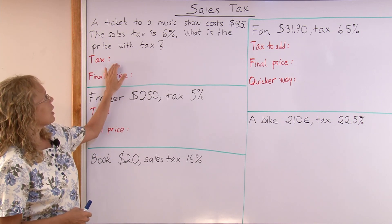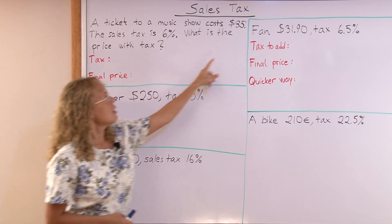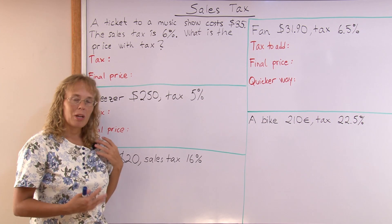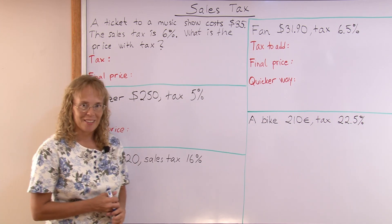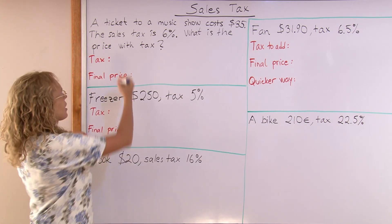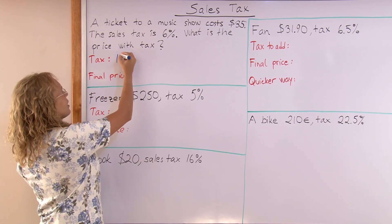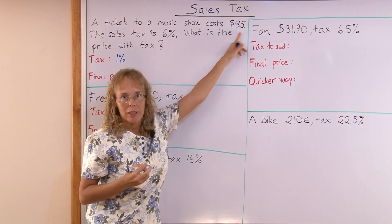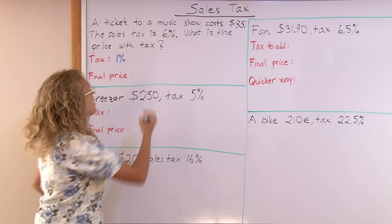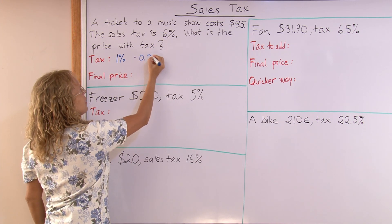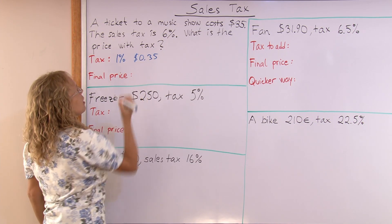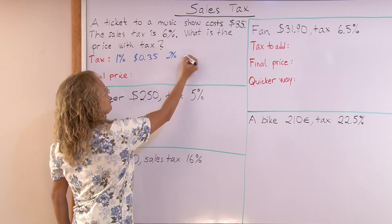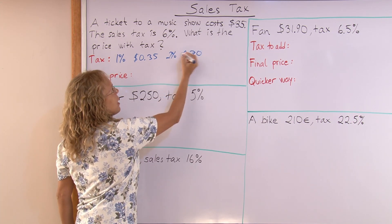We need to calculate 6% of $35. With this problem I will show you how to do it with mental math. We'll first calculate 1%. 1% of this number would be $0.35. And 2% would be double that, which is $0.70.